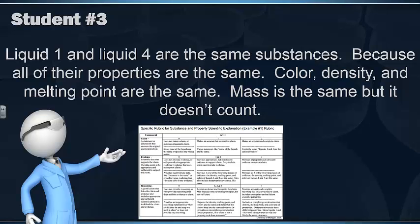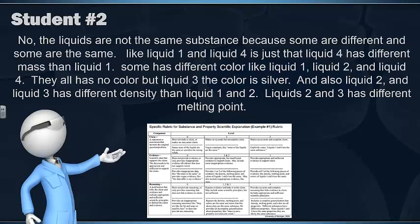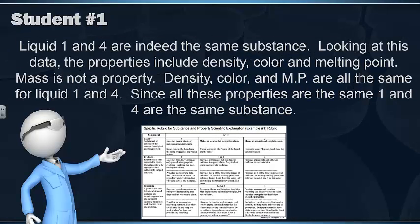So let's discuss what level we would put these three examples at. Let's go back to level 1. Did they make a claim? The claim is that liquid 1 and 4 are the same substance. So they did make a claim. And it explicitly states that liquids 1 and 4 are the same substance. So they would get a 2 for claim.